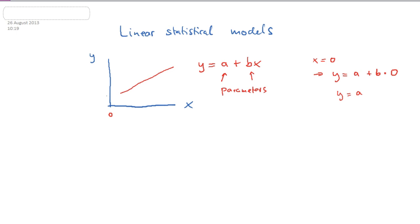then A is the value where the line intersects with the y-axis. And this is the so-called intercept.